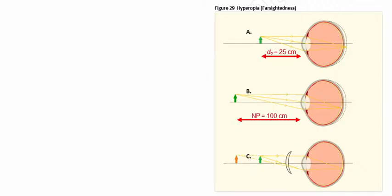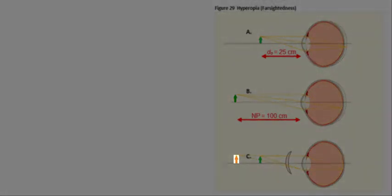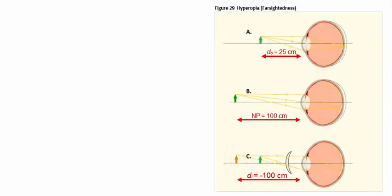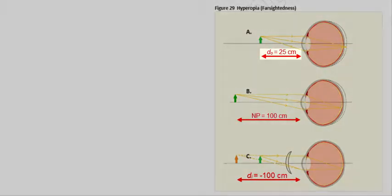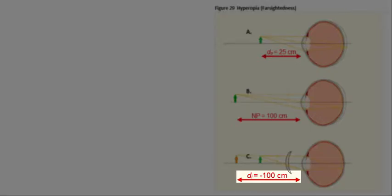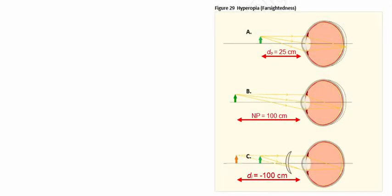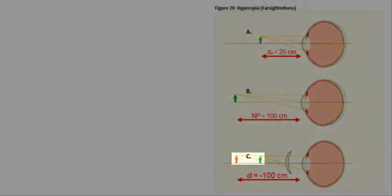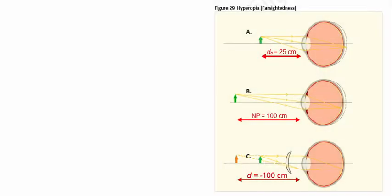The converging lens will form an upright virtual image at the near point of the hyperopic eye. In turn, the virtual image then acts as the object for the eye itself. Note, the object's distance is positive, but the image distance is negative. Recall earlier in Table 6, we stated that the image distance is negative when the image is virtual and on the same side of the lens as the object. Sign conventions were covered earlier in this lecture.